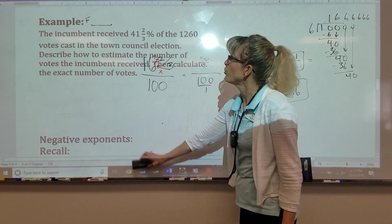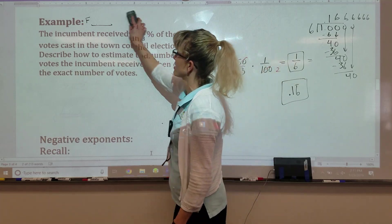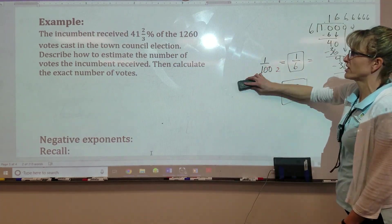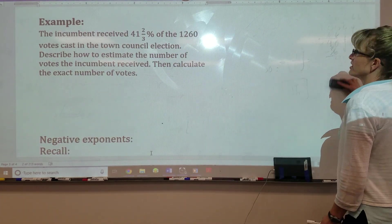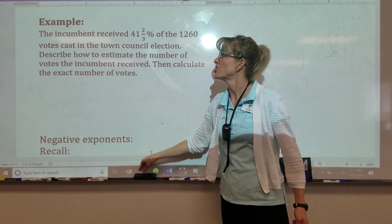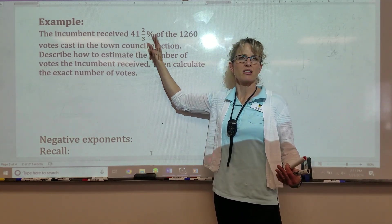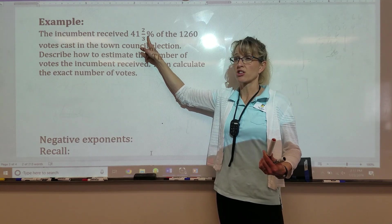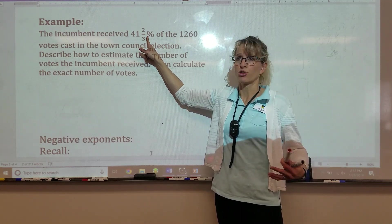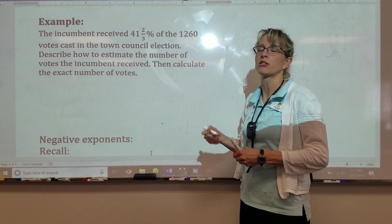We're going to skip that. If I needed to find out 41 and 2 thirds percent of a whole number, in this case, 1,260, I need to change the percent. Remember, we're not allowed to multiply a percent, so I have to change the percent into either a decimal or a fraction. Let's change it to a fraction. That'd be easier.